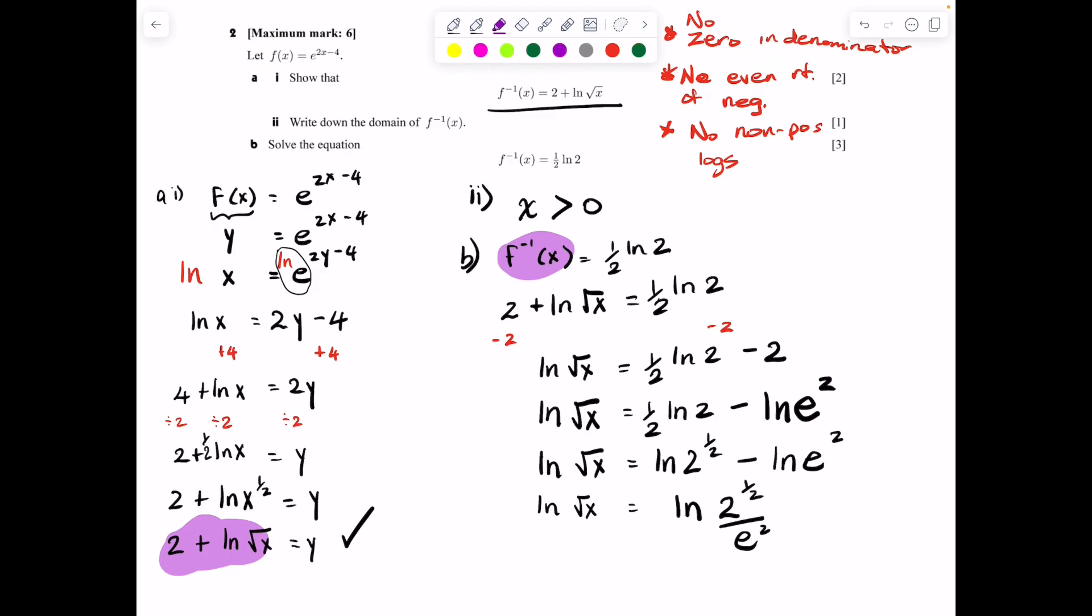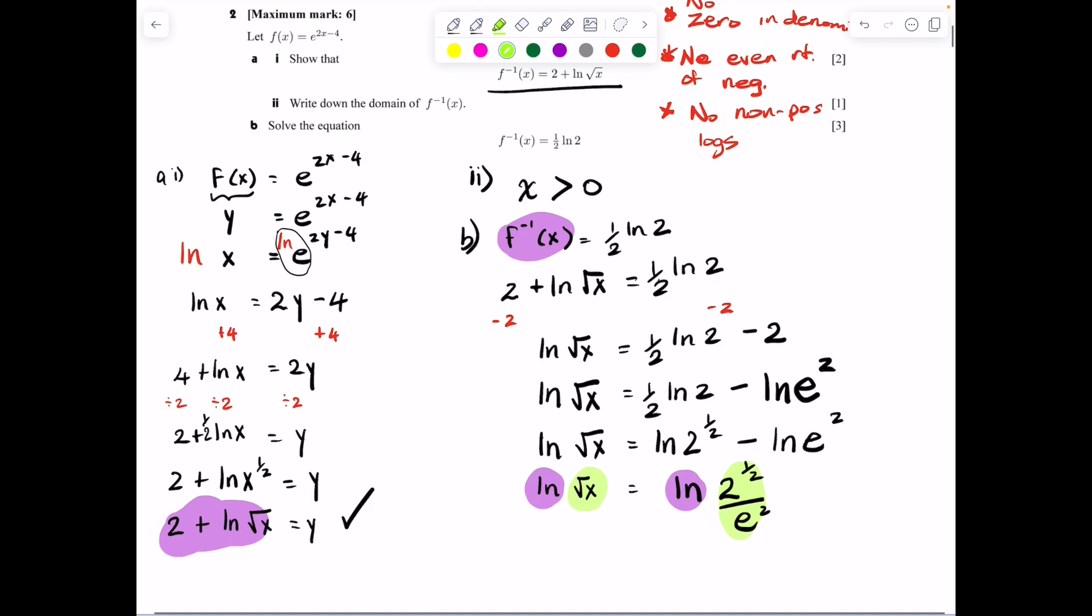Now there is an ln right here. There is an ln right here. We're not canceling them out, but they're the same exact thing, which means that whatever comes afterwards, they are the same things as well. So we can disregard that ln and just write what comes after the ln, which is √x = √2/e^2.